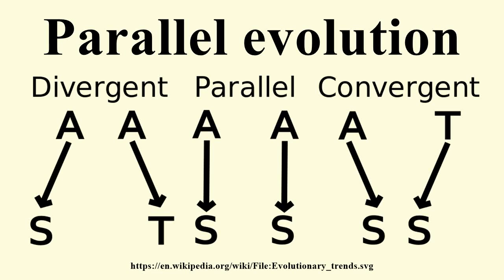Parallel evolution is the development of a similar trait in related, but distinct, species descending from the same ancestor, but from different clades. Given a particular trait that occurs in each of two lineages descended from a specified ancestor, it is possible in theory to define parallel and convergent evolutionary trends strictly and distinguish them clearly from one another. However, the criteria for defining convergent as opposed to parallel evolution often are unclear in practice, so that diagnosis commonly is arbitrary in particular cases.